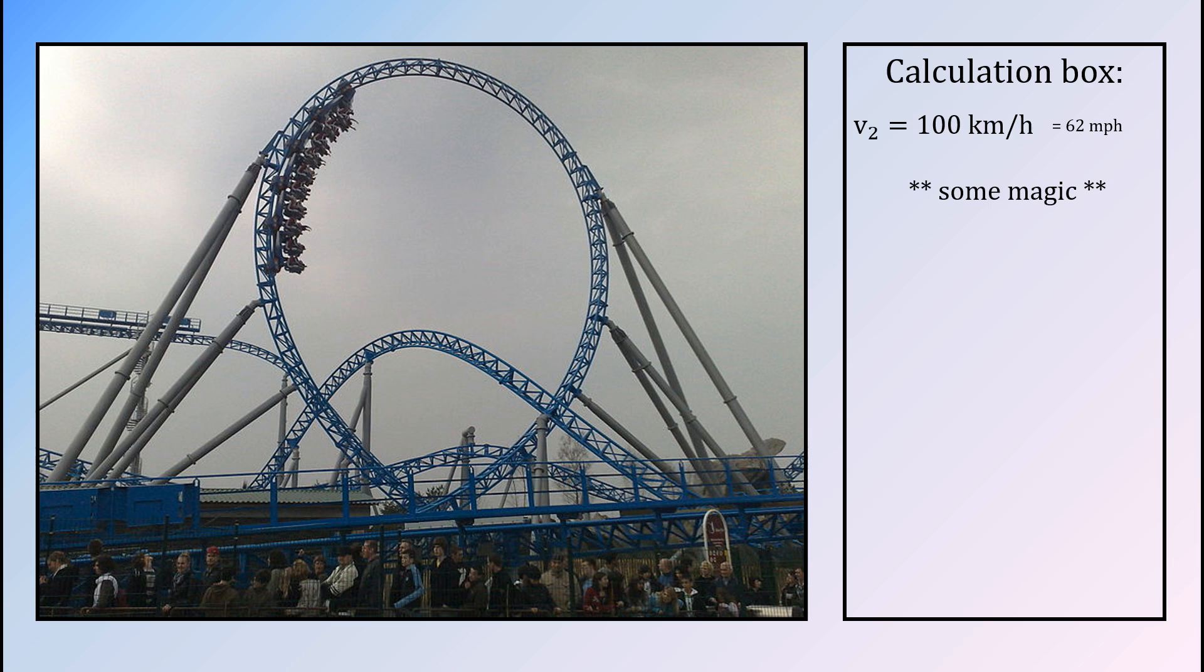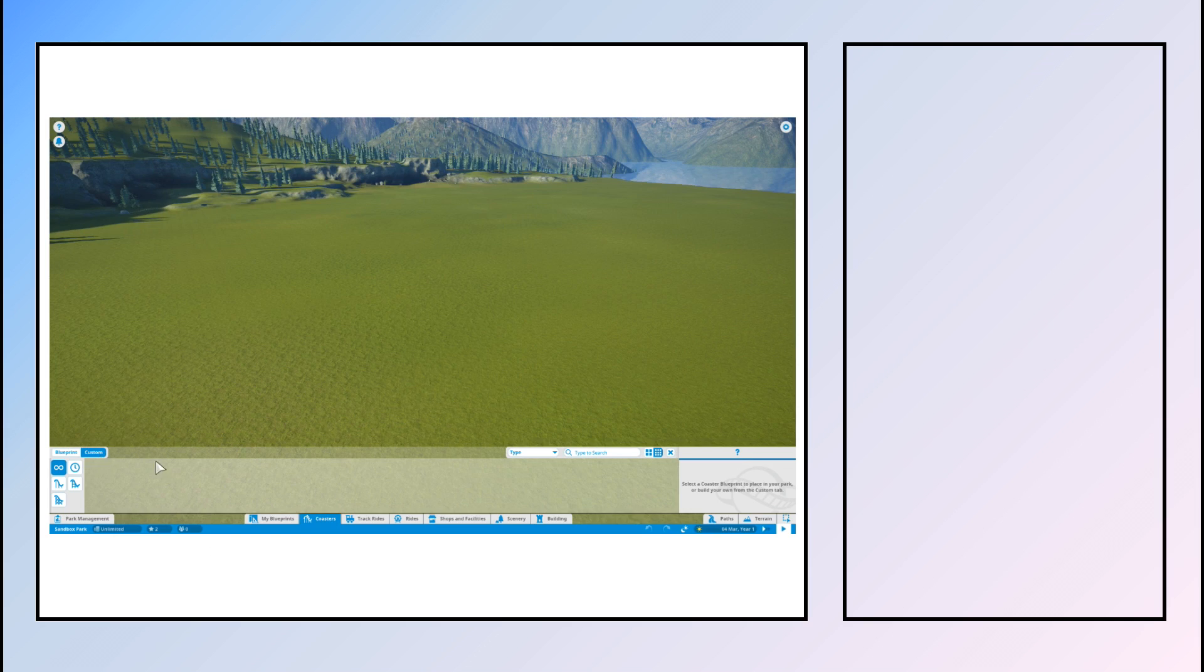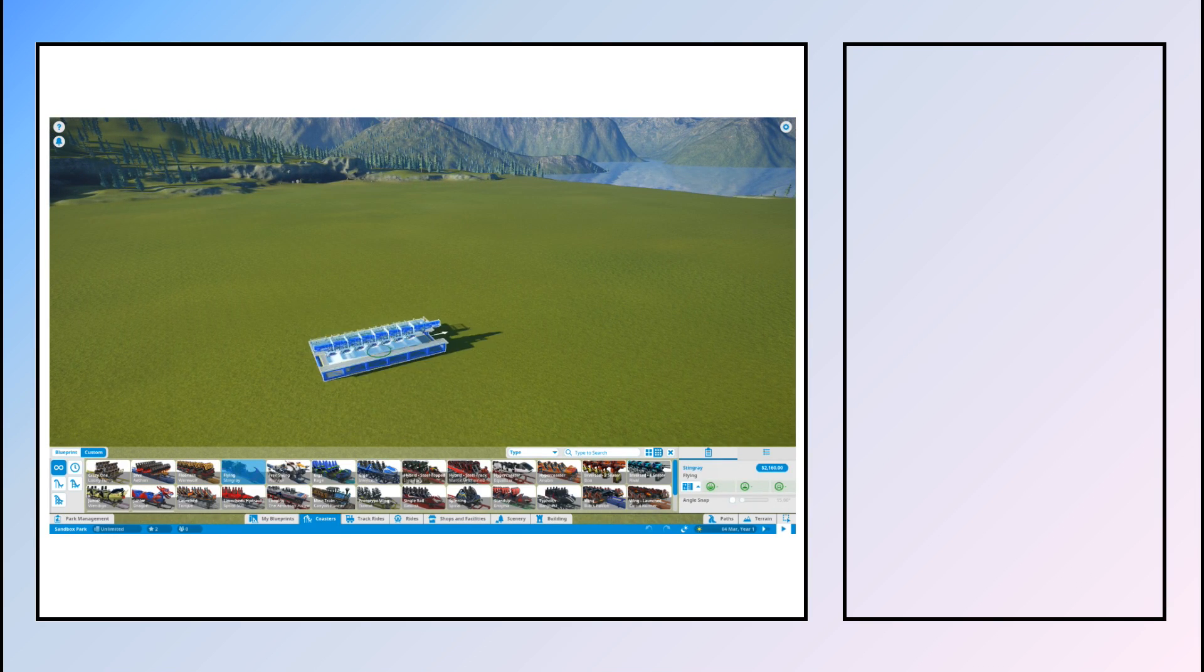Besides all these energy levels, there is also the concept of g-forces. Calculating these is a bit more complicated, but in this diagram you can see the limits of tolerance of a human body. And believe me, you definitely want the g-forces to be below this when you are riding a rollercoaster.